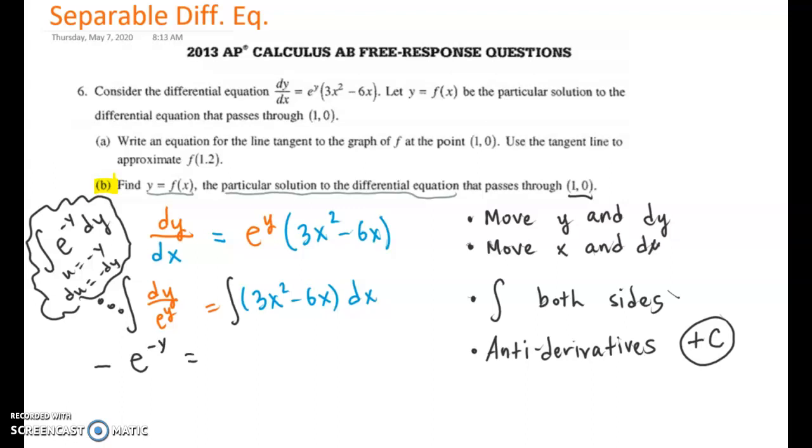My antiderivative on that side is going to be -e^(-y). The other side, the antiderivative I hope is pretty straightforward. This would be x³, so 3x³ divided by 3 minus 3x². And this is where you need that plus C. We've earned a couple points already because we moved our stuff around, did the antiderivatives correctly, and remembered to put plus C in. Often this is like 3 points already.